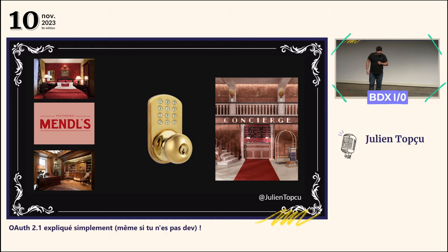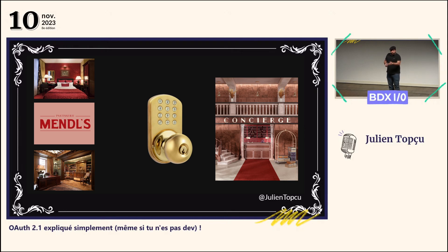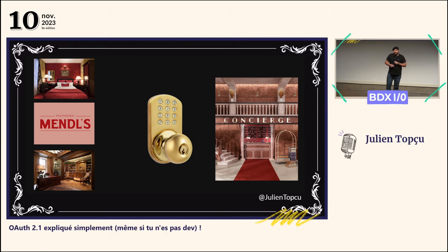Pour vous expliquer pourquoi ce problème récurrent existe, il faut que je vous explique comment est organisé l'hôtel. Dans l'hôtel, il y a une partie privative dans laquelle vous allez retrouver les chambres, la pâtisserie Mendels, qui est très réputée et très demandée, et le bureau du concierge général qui s'appelle Gustave, qui est le gérant de l'hôtel, qui est un peu mon boss.